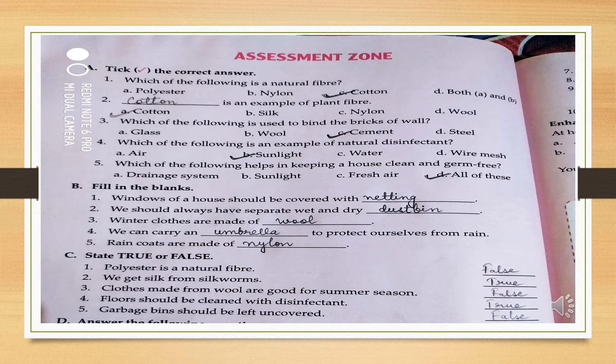First question: which of the following is a natural fiber? First of all, tell me what is a natural fiber. A natural fiber means fiber obtained from plants or animals. The options given are: polyester, nylon, cotton, both A and B. The answer will be cotton.